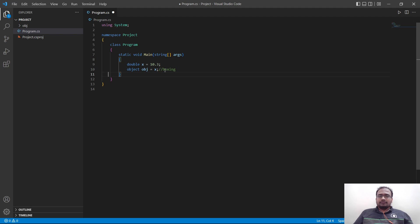Next, let's try to unbox this back. We will have another double y equals to double obj. Now, this process is called unboxing.